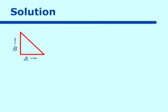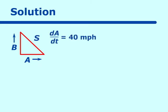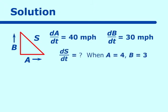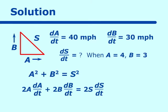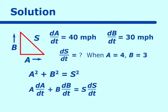We have a right triangle and the Pythagorean theorem will be involved. We know dA/dt is 40 miles per hour going east and dB/dt is 30 miles per hour going north. We need to find ds/dt when A is four and B is three. Using Pythagorean theorem: A² + B² = s². Taking the derivative: 2A dA/dt + 2B dB/dt = 2s ds/dt. Cancelling the twos, ds/dt stands alone.